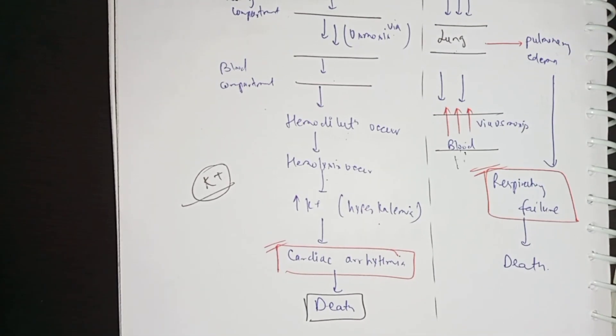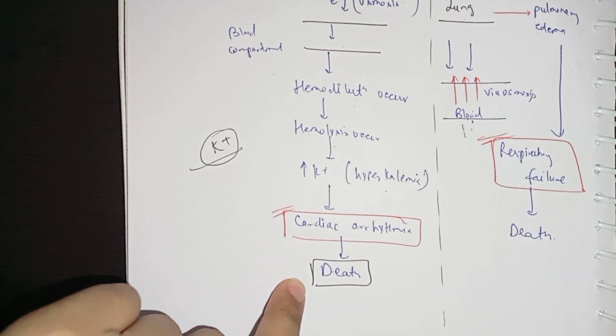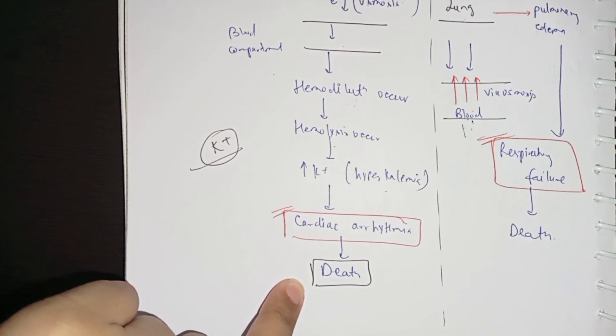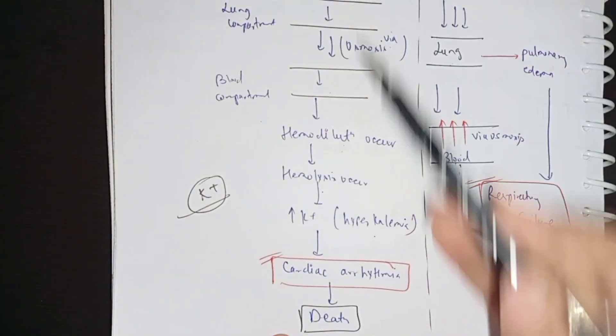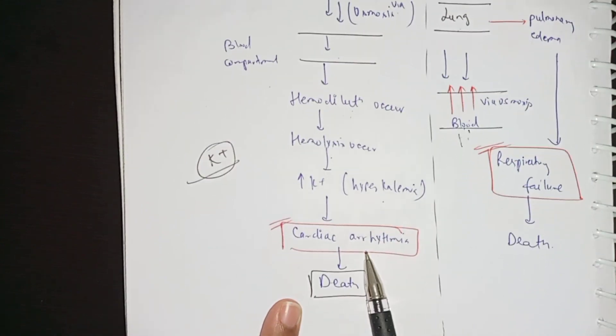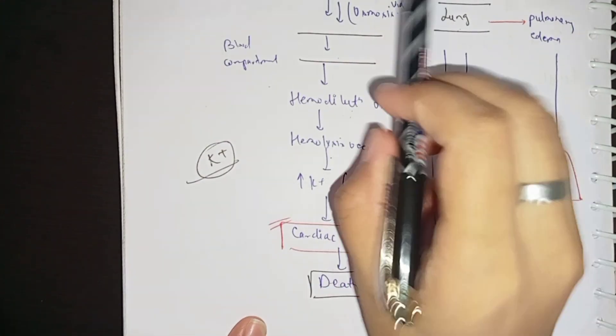Hyperkalemia is the cause for cardiac arrest. What is the cause? Cardiac arrhythmia is the cause for the death of the person in fresh water.